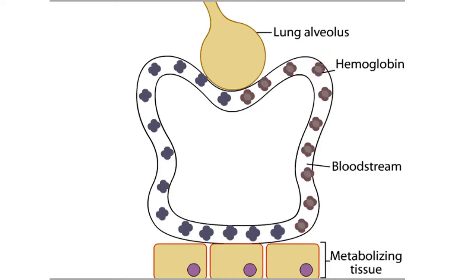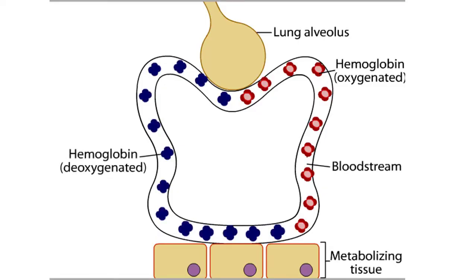After passing through the lungs, hemoglobin is oxygenated, and as it passes through the metabolizing tissues, it becomes deoxygenated.